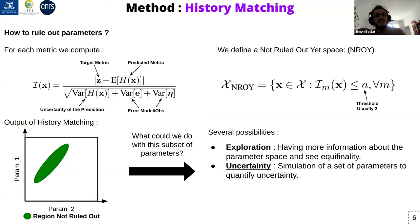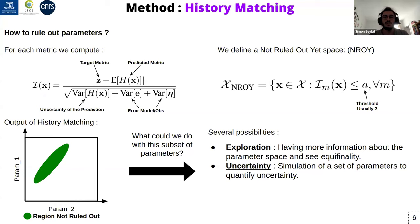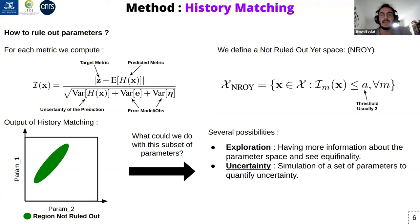Basically you compare the predicted metric against a target metric — the target metric is computed from observations, and it represents where you want the model to go. For that you also take into account two kinds of errors: the model error and the observation error, but also the uncertainty given by the Gaussian process, meaning that when you are uncertain about a point you take that into account. You then keep all the points that give an implausibility less than a threshold — usually set to three for the three-sigma rule — and this defines the NROY space, a subspace of parameters for 'Not Ruled Out Yet', where you should find a set of parameters giving consistent simulations given your target.